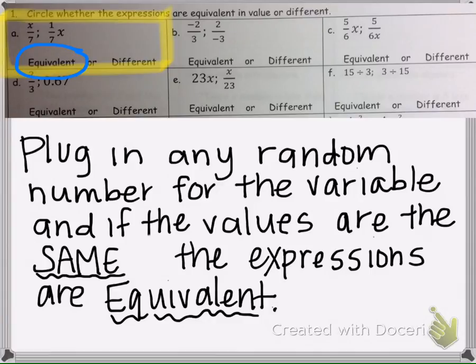Another way to prove that the expressions are equivalent, since they're variable expressions, is to plug in any random number for the variable. If the values are the same, then we know the expressions are equivalent. You can plug in a couple different numbers, and they should always evaluate to the same number. Let's go ahead and show this.